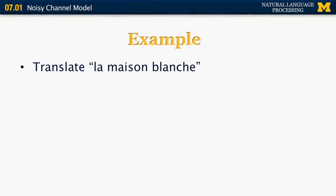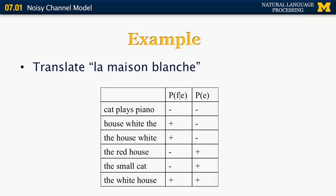Here's an example from French. We want to translate "La Maison Blanche" from French into English — for those who don't know French, this means "The White House." Consider some possible translations. The first is "Cat Plays Piano." Obviously, the probability that this foreign string matches the English string "Cat Plays Piano" is very low, so we put a minus in that box. The English language probability of "Cat Plays Piano" is also low, since it's not a valid sentence.